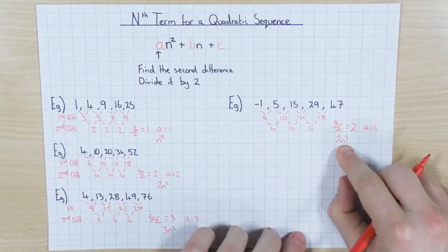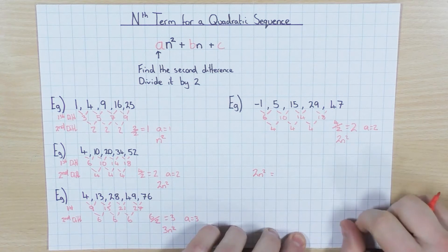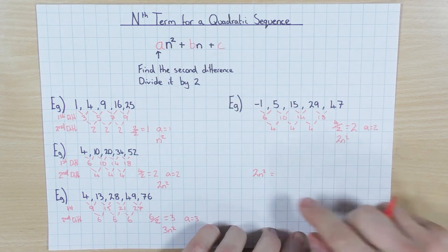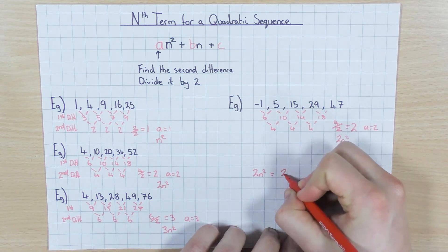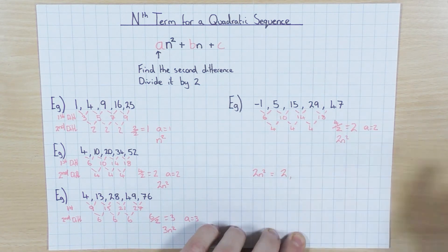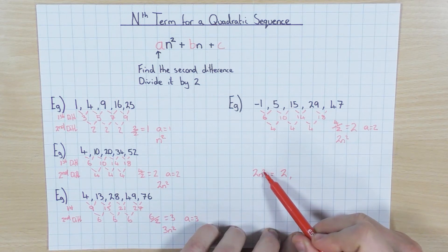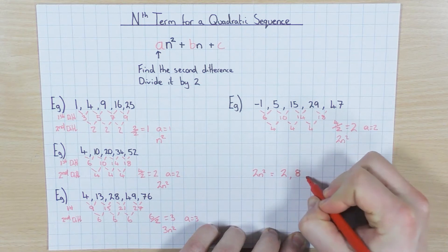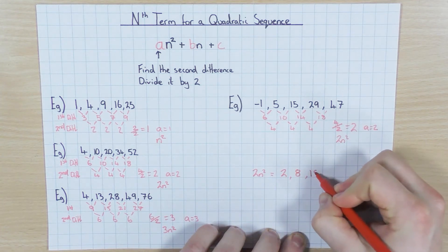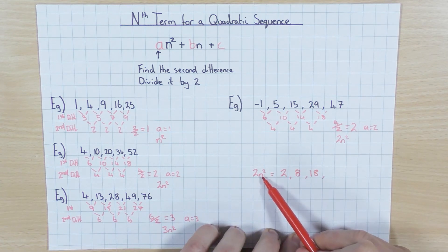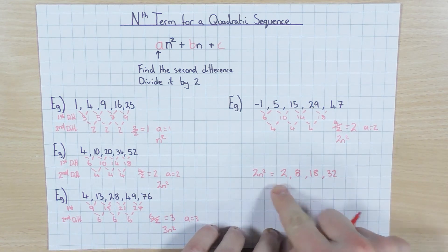Once you've figured out the start is 2n squared, what we do is generate the sequence for 2n squared. For the first term, n is 1: 1 squared is 1, times 2 is 2. For the second term, n is 2: 2 squared is 4, times 2 is 8. For the third term, n is 3: 3 squared is 9, times 2 is 18. For the fourth term, n is 4: 4 squared is 16, times 2 is 32. So 2n squared generates this sequence.